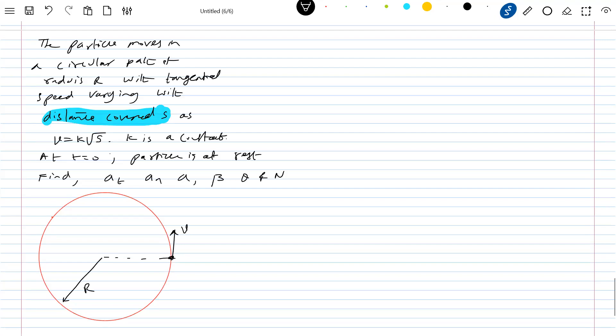Then, because of velocity, it must have a normal acceleration. Because of speed, it must have a tangential acceleration and the total acceleration vector. And this is beta. Let's come for one by one.